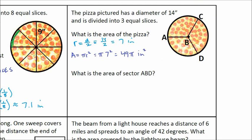And then it asks the question, if you know the area, what is the area then of sector A, B, D? Just this sector right here. Well, we know that the pizza is divided into 3 equal slices. So if we know it's divided into 3 equal slices, then we know that sector A, B, D is 1 out of 3 equal slices.